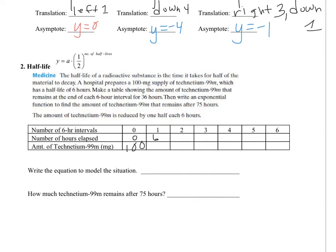After 12 hours, which is 2 six-hour intervals, you're going to have 25. After 18 hours, you're going to have 12.5, and it's going to keep halving every 6 hours.